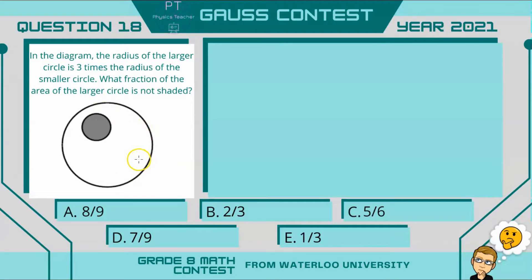So in this question, the actual radius of the two circles doesn't matter. What matters is that the big circle has a radius 3 times that of the small circle. So let's say the small circle has a radius of 1, and therefore the big circle will have a radius of 3.